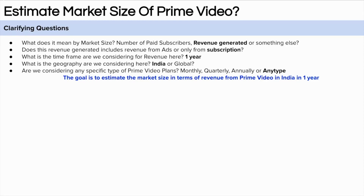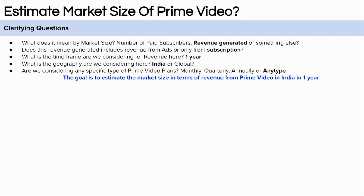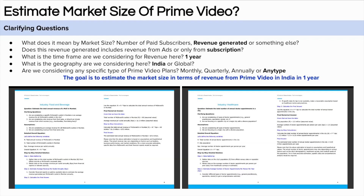The third question we can ask is about the time frame — in what time frame are we calculating? Let's assume we are going to calculate the subscription revenue of Amazon Prime Video in one year, so basically the annual subscription revenue of Amazon Prime. The fourth question is about geography — are we thinking about global revenue or a specific geography? Let's assume we are thinking about India. The fifth question is about subscription plans, since Amazon Prime has monthly, quarterly, and annual plans. Let's assume we are not bounded by any such constraint.